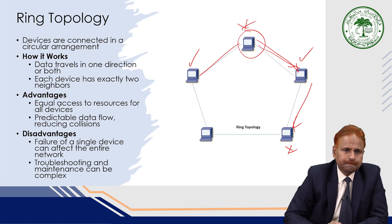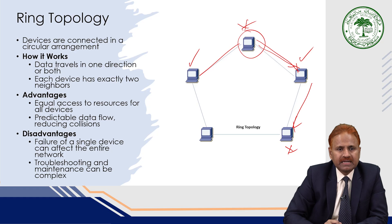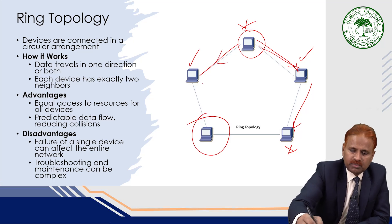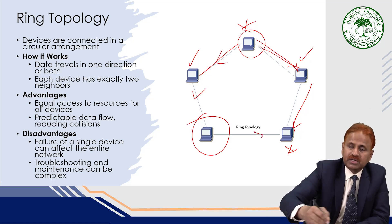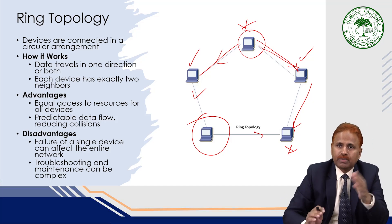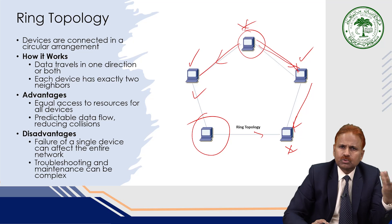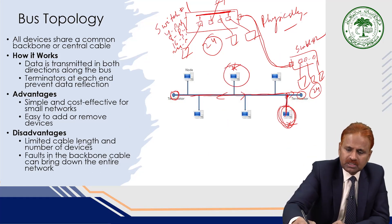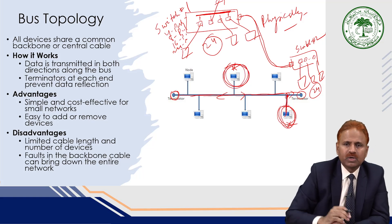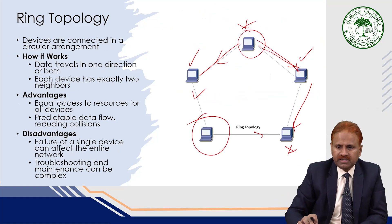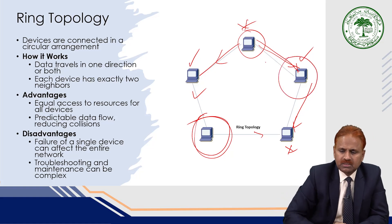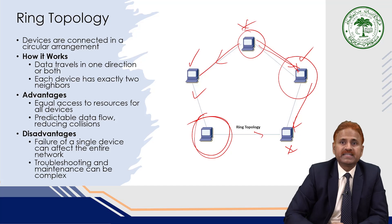Failure of a single device can affect the entire network in ring topology. If something goes wrong with one device, the data traveling through that point is affected, disrupting the whole network. This is different from bus or star topology, where if one computer goes down it does not affect the rest of the network — only that computer's operation is affected.